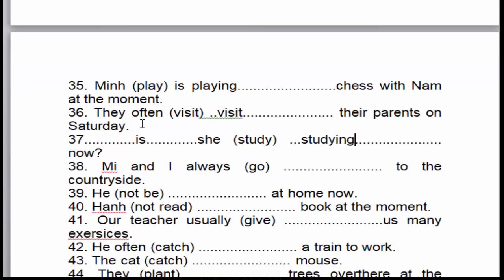Câu số 38: 'My and I always go to the countryside.' Tôi và My luôn luôn đi về quê. 'Always' là dấu hiệu nhận biết của thì hiện tại đơn. 'Tôi và My' là chủ ngữ số nhiều, cho nên động từ để nguyên mẫu.